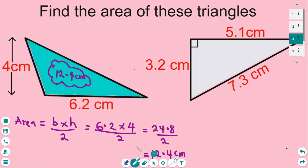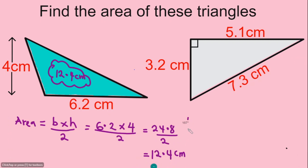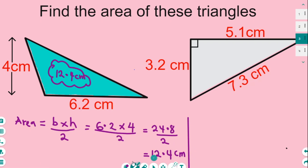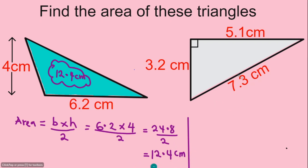Moving to the next question: this triangle has three sides of different lengths. Imagine this triangle flipped so it sits on its base of 3.2 centimeters, with a height of 5.1 centimeters. Note that the slope height of 7.3 centimeters is NOT the height to use — the correct height is 5.1 centimeters because it makes a right angle with the base when the triangle is oriented this way.